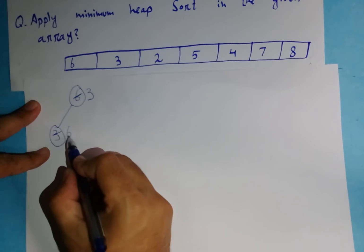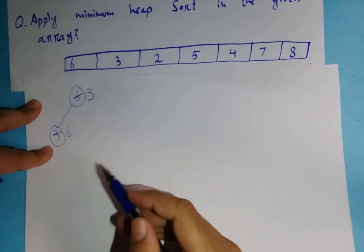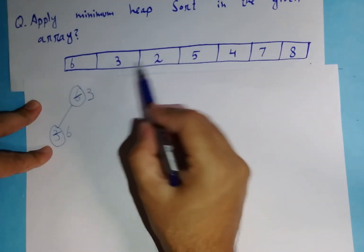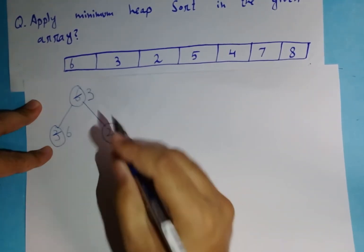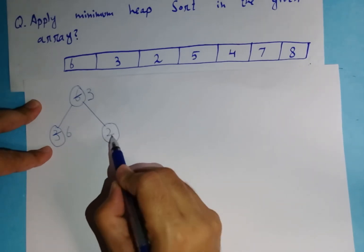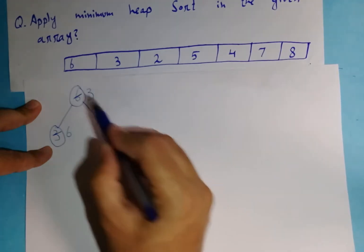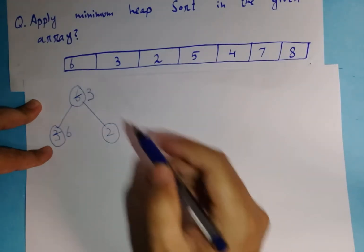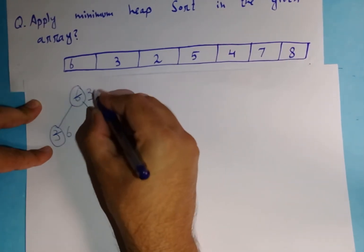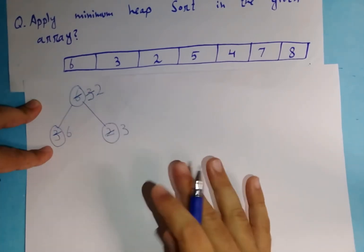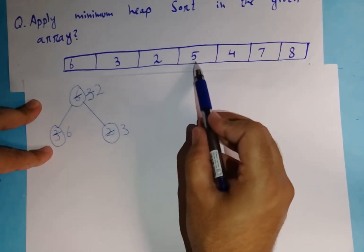Now I check the condition again — it is true because 6 is greater than 3, so the child node value is greater than the parent node. Going back to the array, after 3 the value 2 comes up. I write down 2 and check the condition — it is false because the child node value is smaller than the parent node. So I swap again: 3 goes down and 2 goes up.